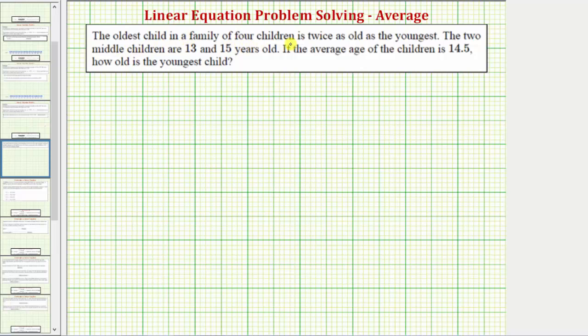The oldest child in a family of four children is twice as old as the youngest. The two middle children are 13 and 15 years old. If the average age of the children is 14.5 years, how old is the youngest child?